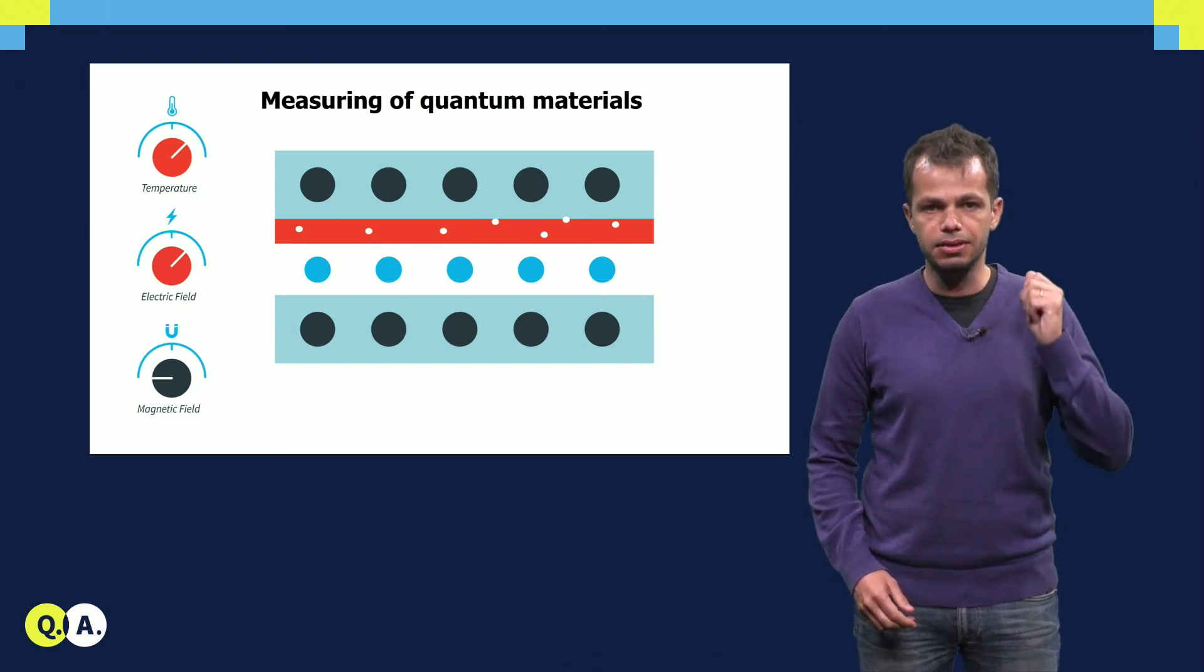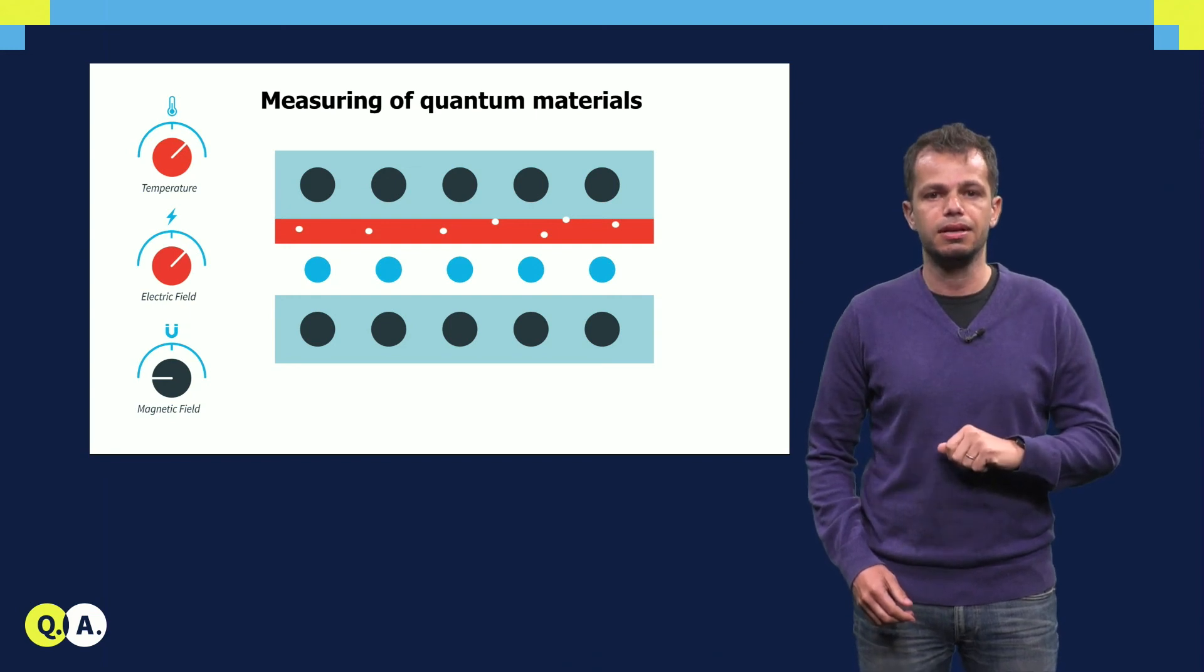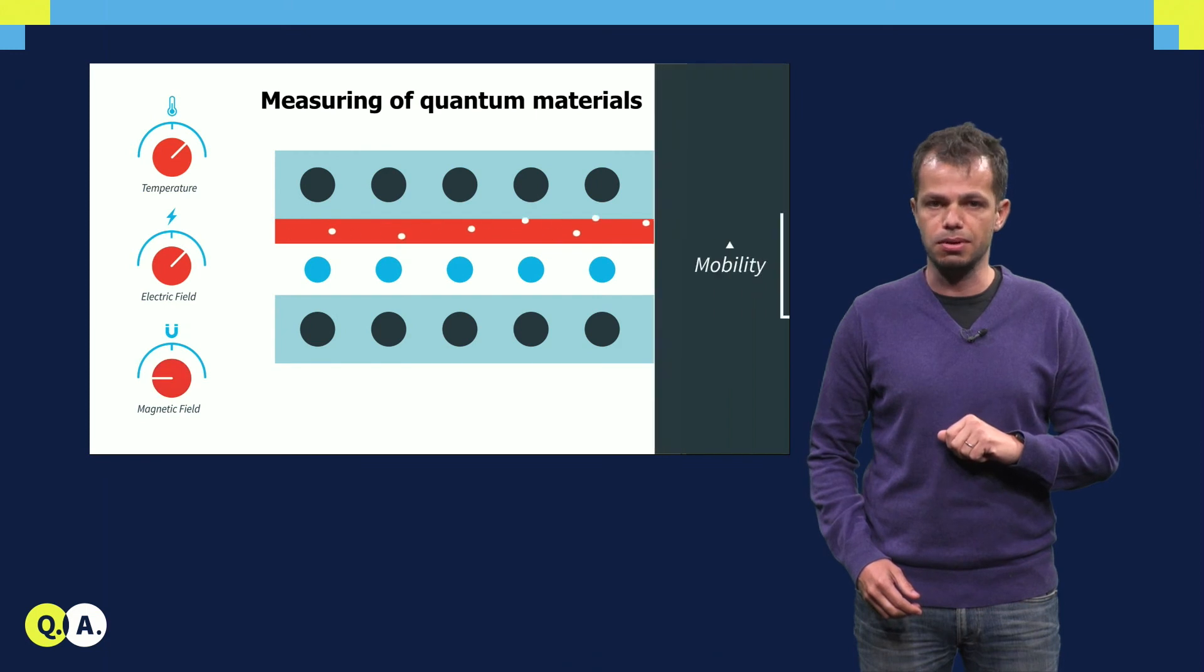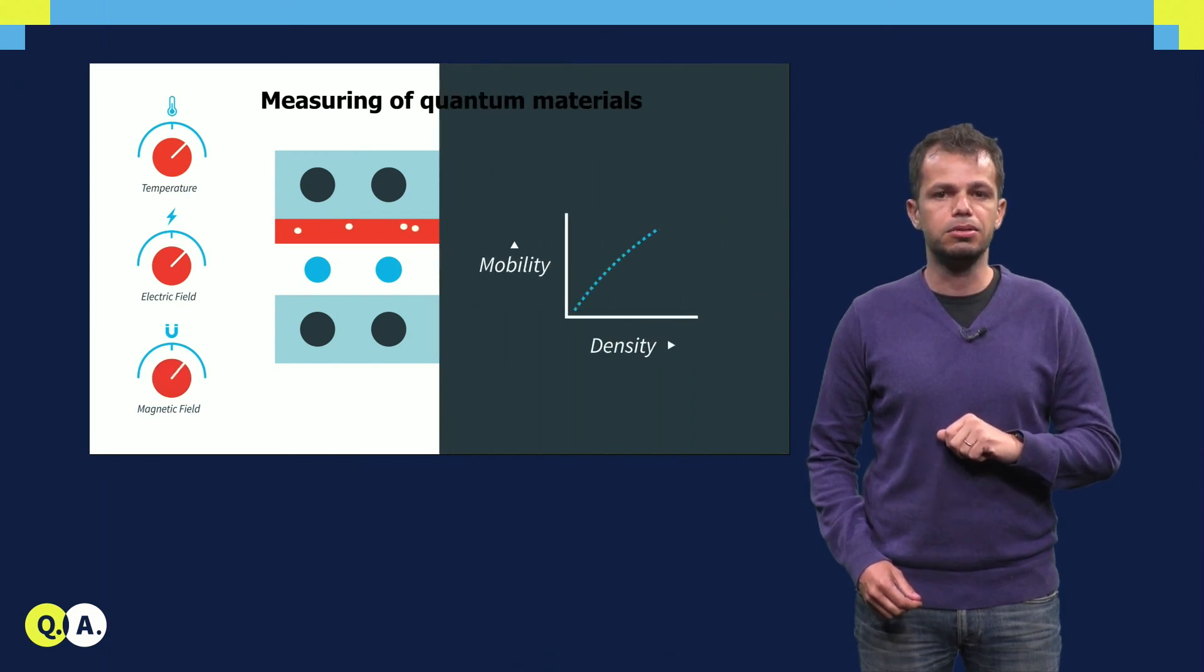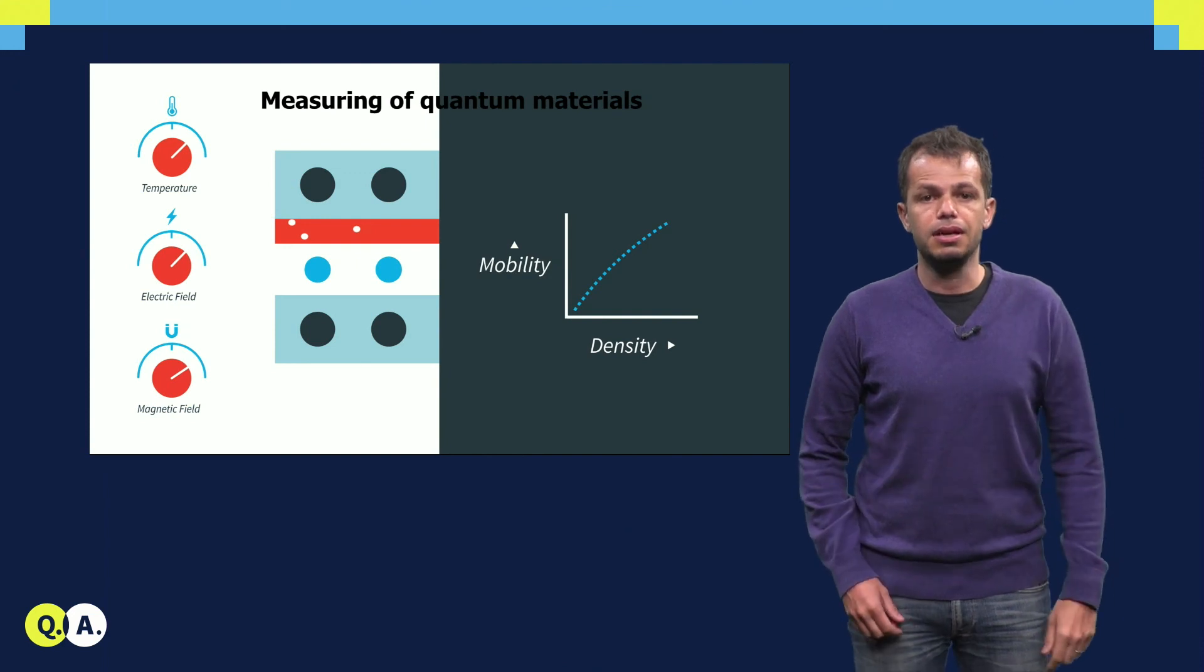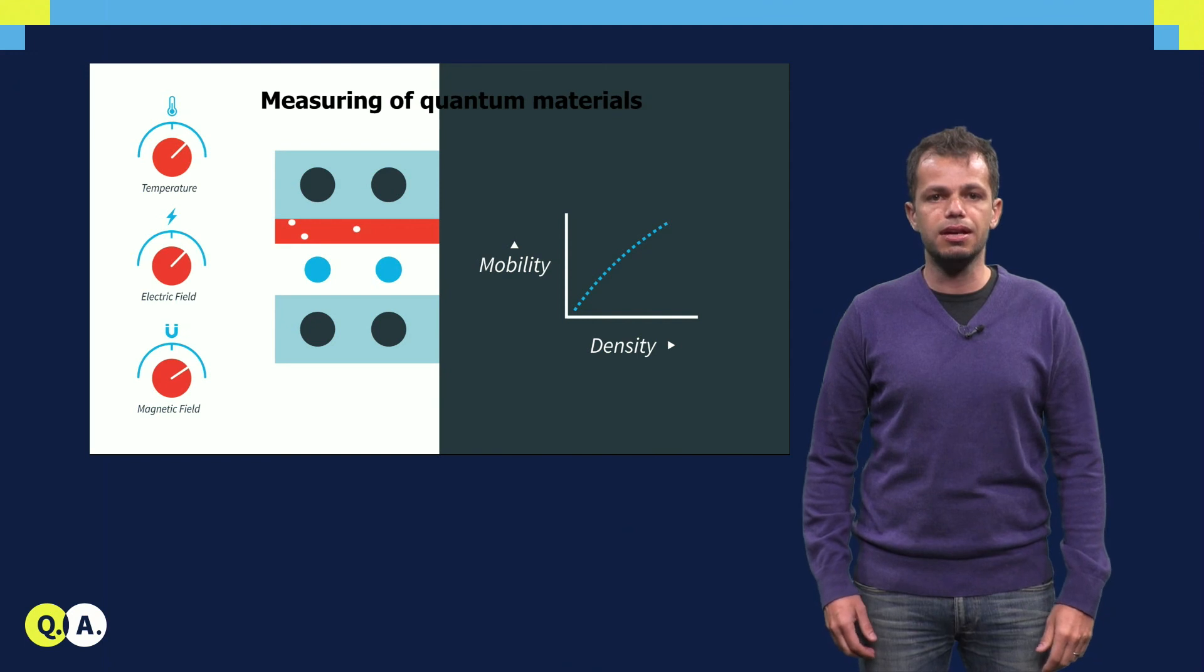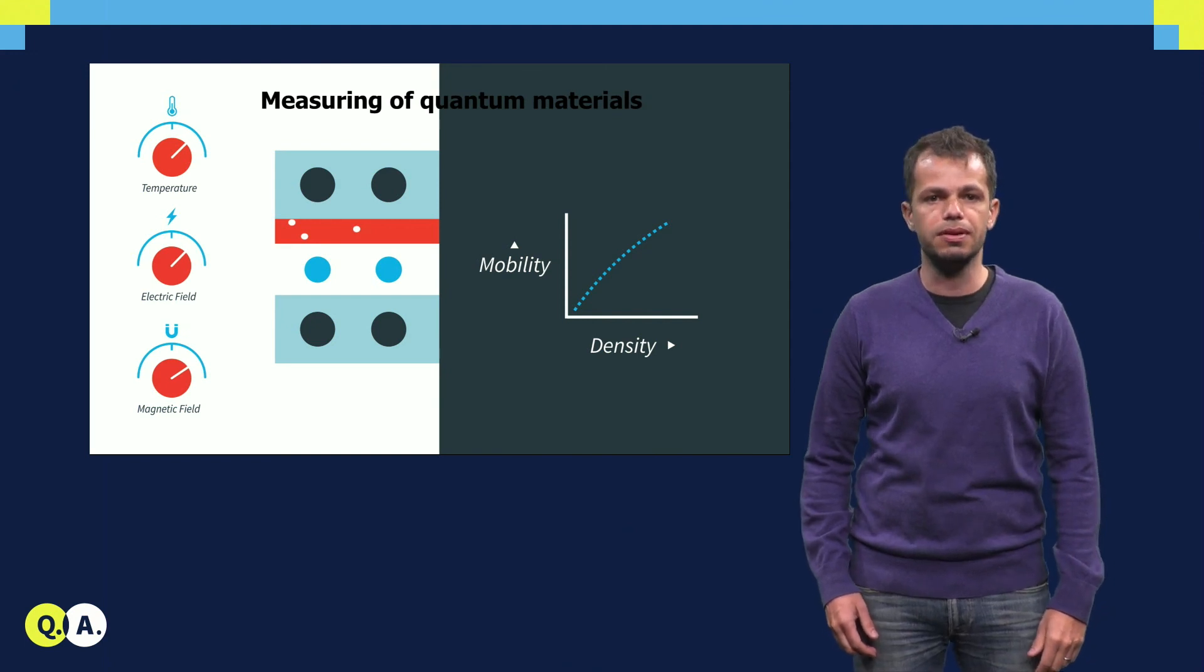The higher the electric field, the more the electrons in the channel. By studying how electrical resistance of such channels responds to a magnetic field, we are able to measure the number of electrons in the channel and their mobility. The mobility tells us how fast electrons can travel in such channels and is an indication of the disorder in the system.